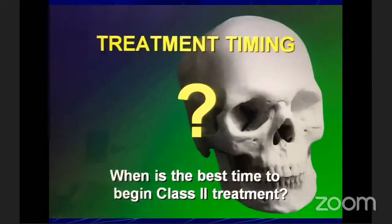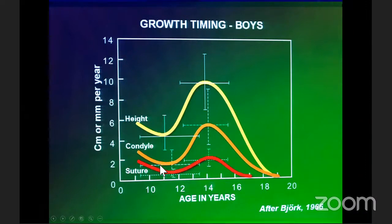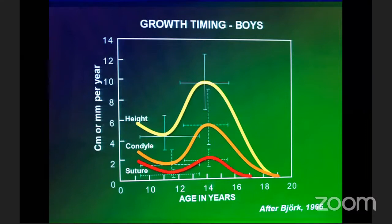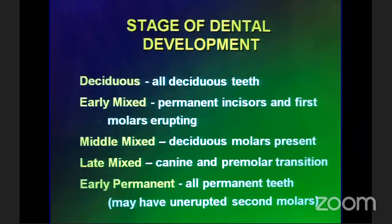What is the best time to begin Class 2 treatment? Growth is not a linear process — there are spurts of accelerated growth in height, condyles, or sutures, and periods when growth slows down. In the juvenile or pre-pubertal stage there's hardly any growth, but during the peak of the pubertal spurt, which happens around 10 to 12 years in girls and 12 to 14 years in boys, we can treat these patients with functional appliances and get maximum benefit. Chronological age is not the right way to determine the actual growth spurt.